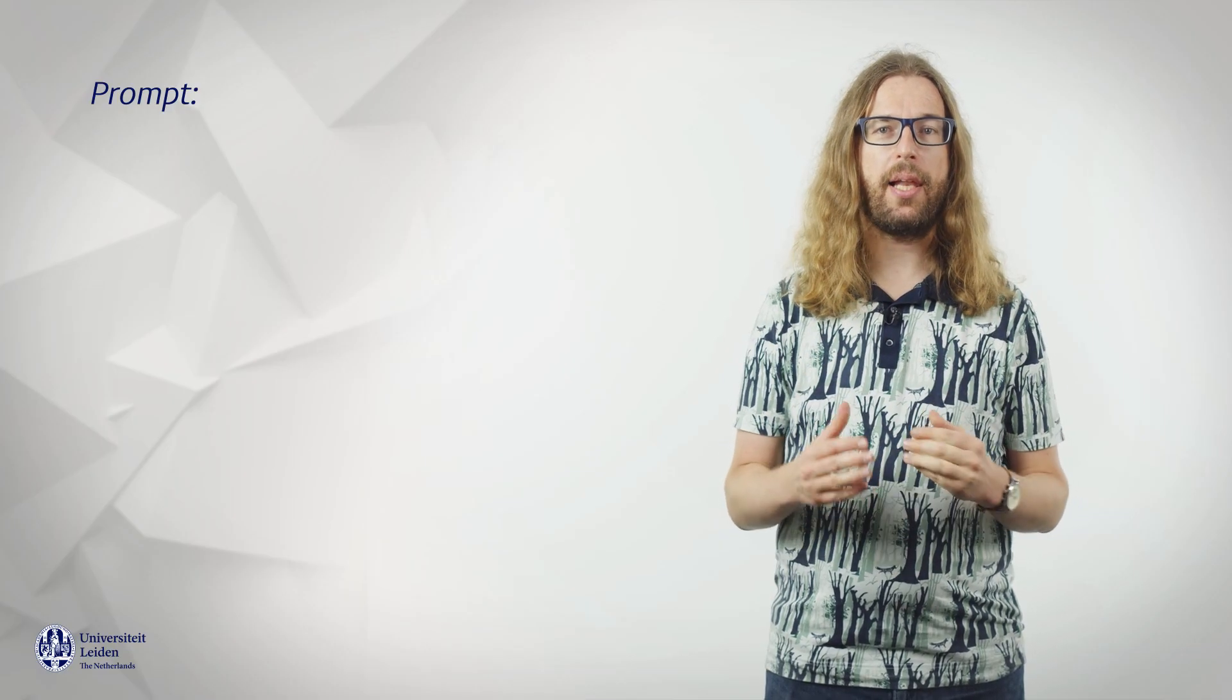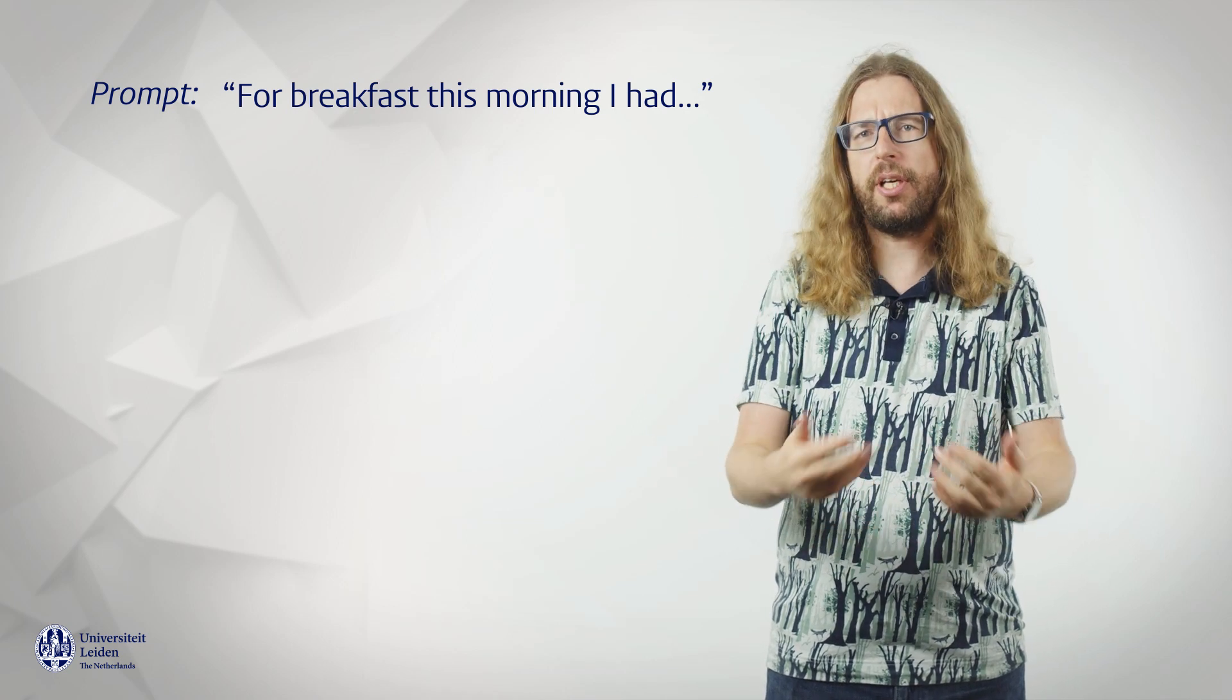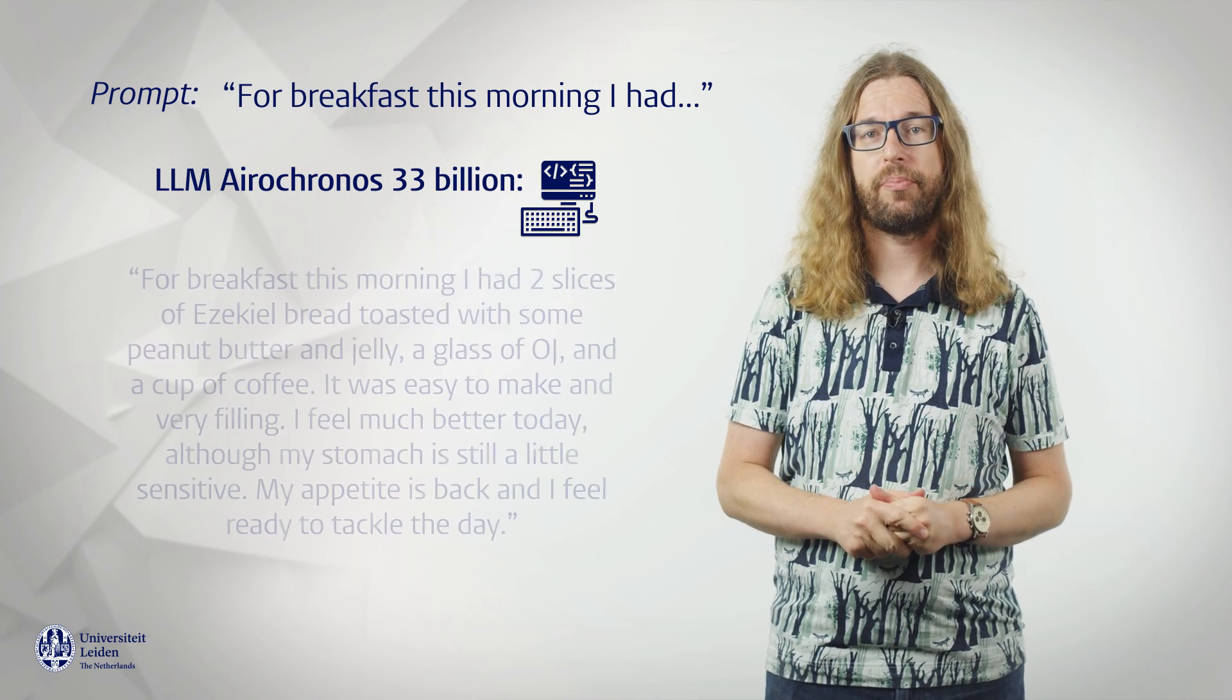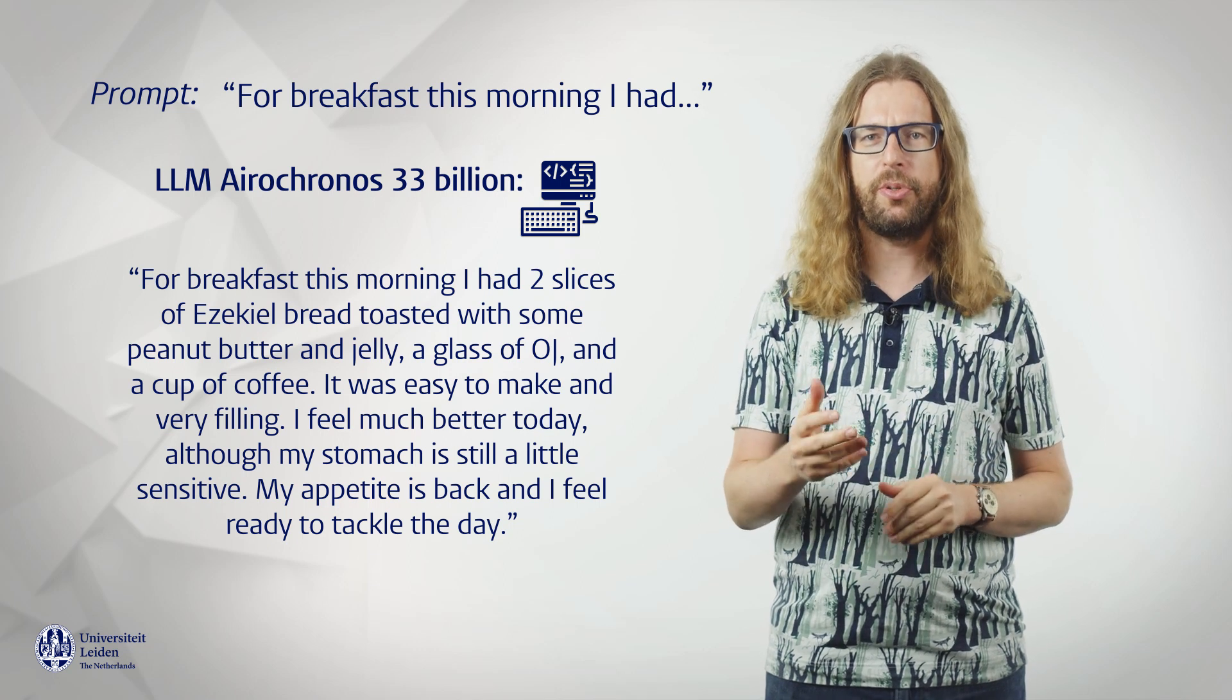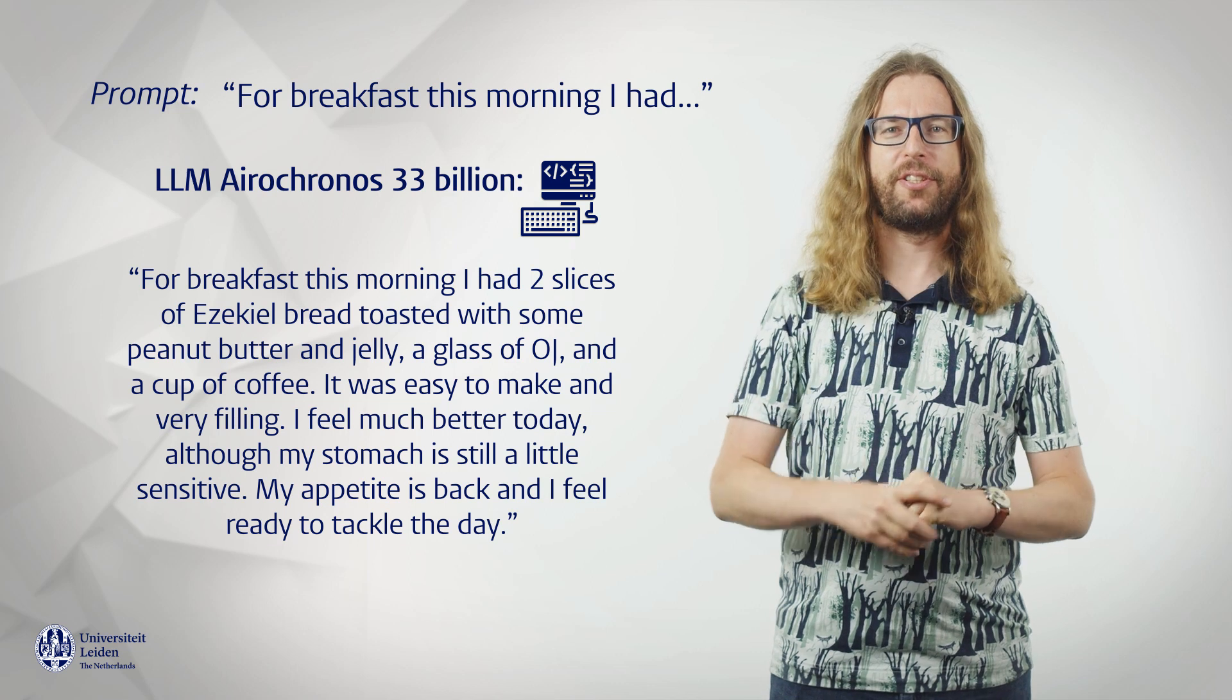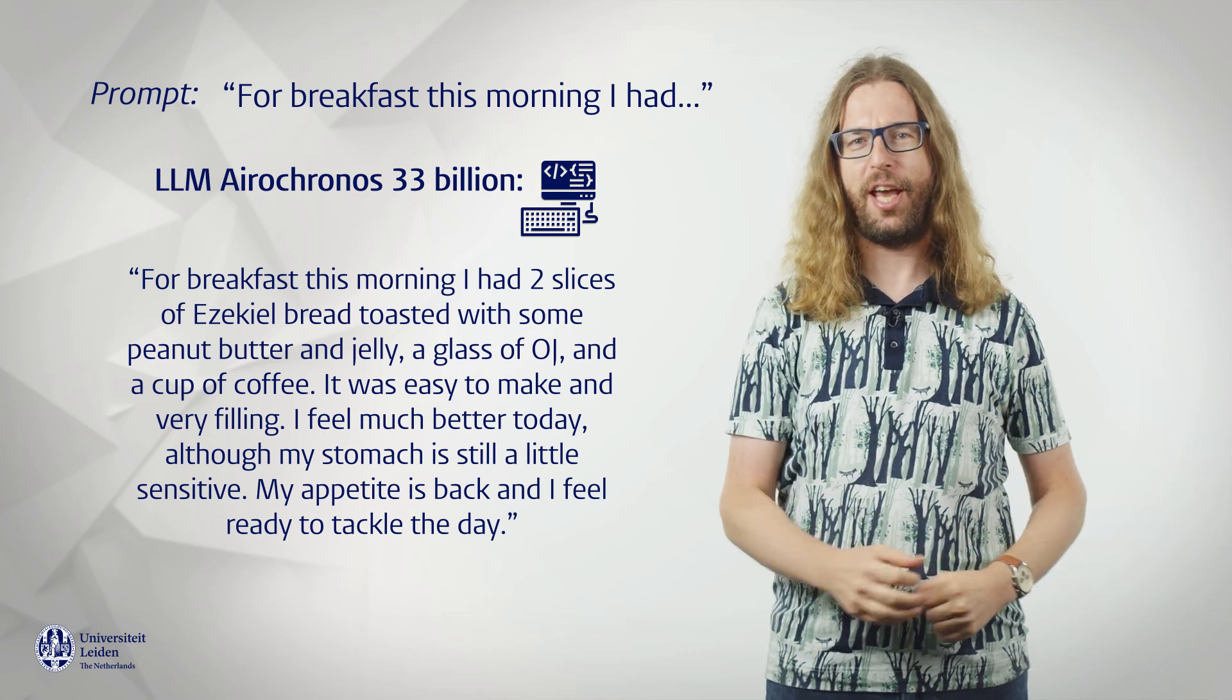It's important to note that this has nothing to do with truth. If you prompt the LLM with, For breakfast this morning I had, it's going to predict something. As a test, I put this prompt in an LLM called Arrow Chronos 33 Billion and I got the following text. For breakfast this morning I had two slices of Ezekiel bread toasted with some peanut butter and jelly, a glass of OJ and a cup of coffee. It was easy to make and very filling. I feel much better today, although my stomach is still a little sensitive. My appetite is back and I feel ready to tackle the day.